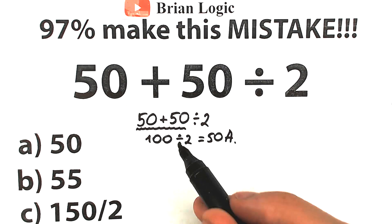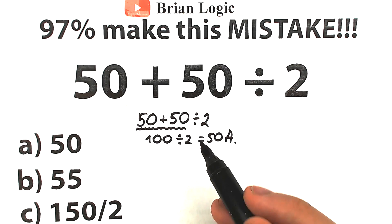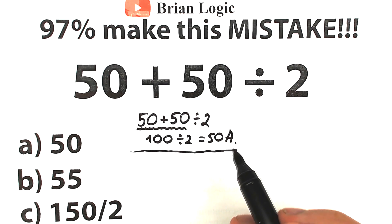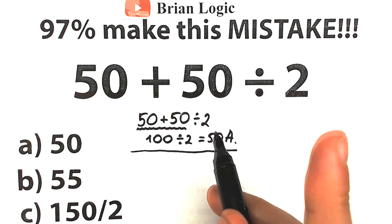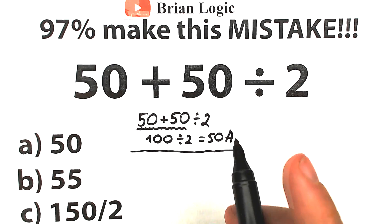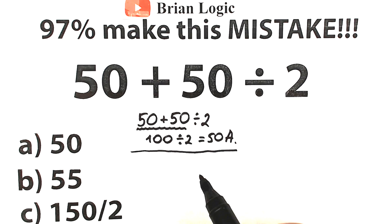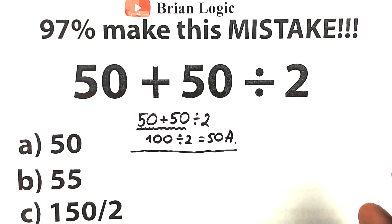We need to understand the correct order of operations. In math, we can't just do whatever we want — we can't solve one question and get two different answers. We need to know the correct rule and property. So let's now solve this question according to the correct order of operation, rather than randomly.